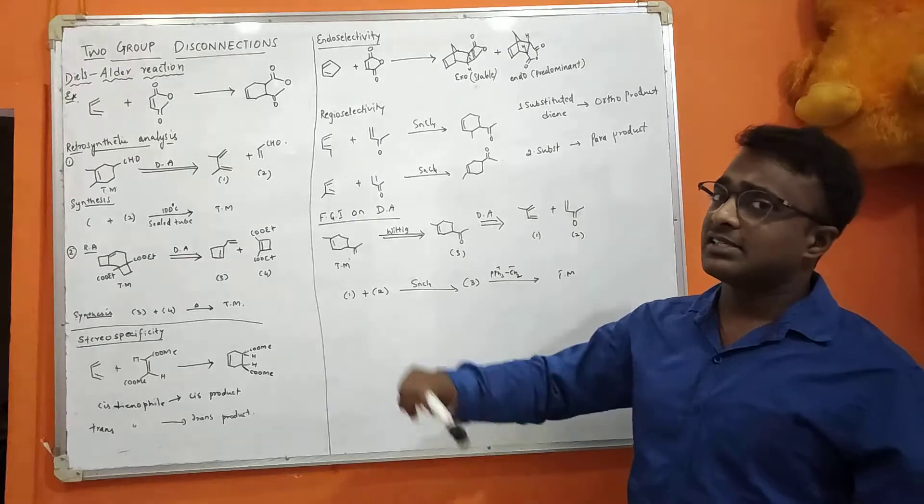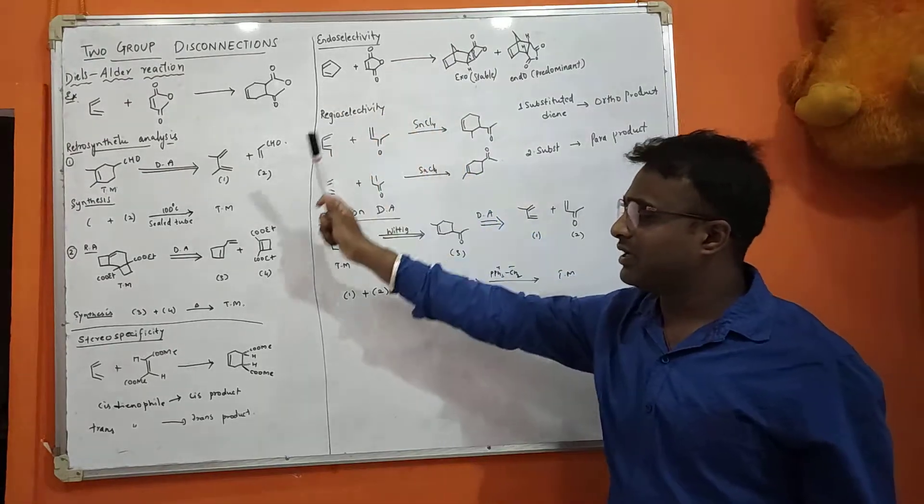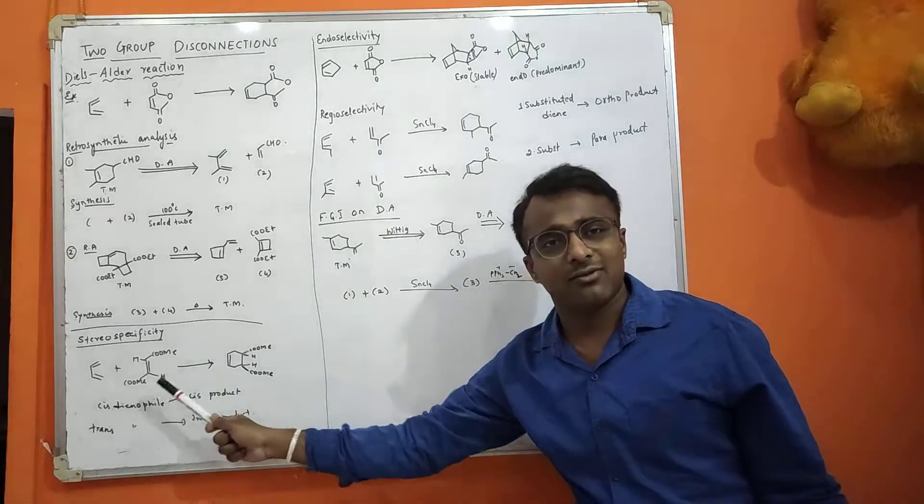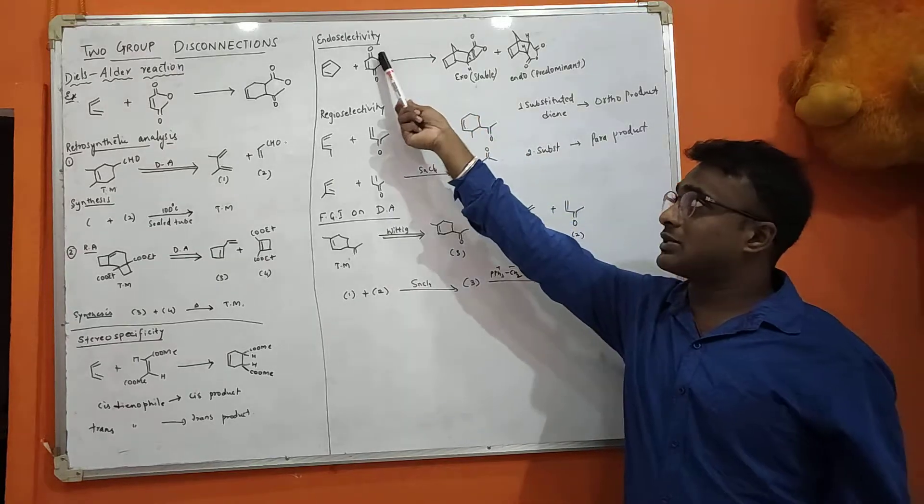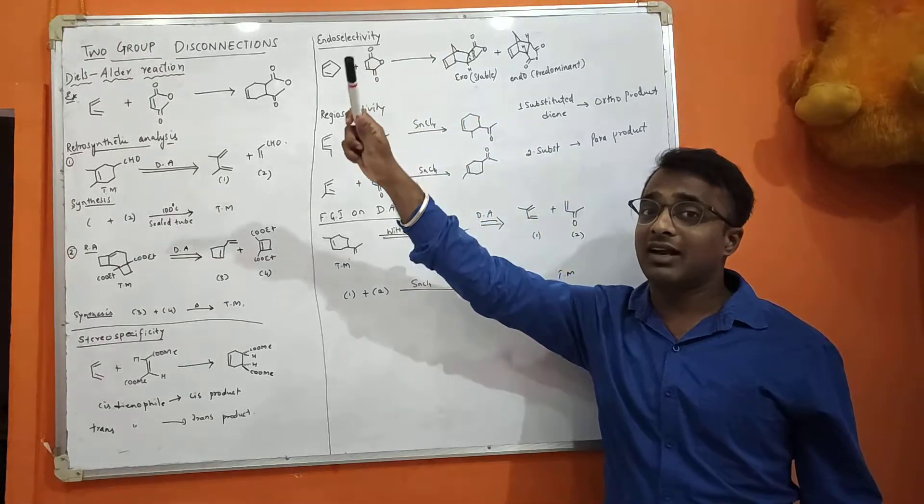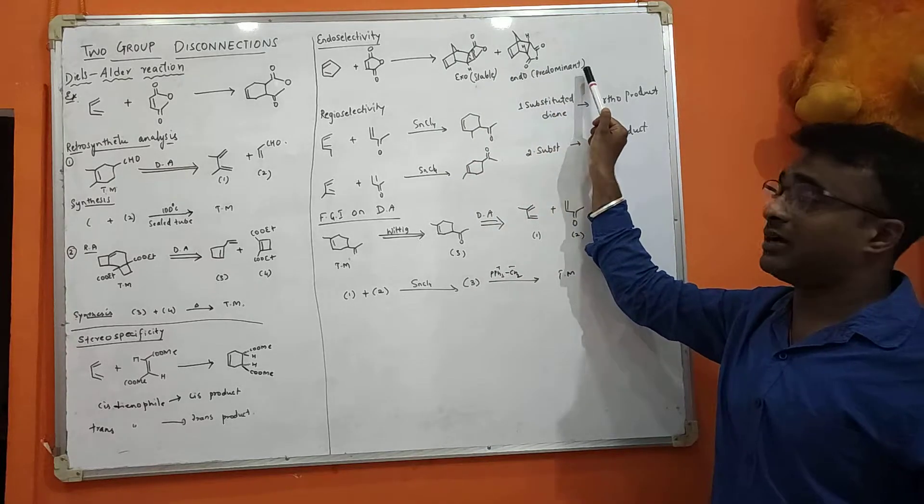Now one more very important thing is stereoselectivity, that is endoselectivity. For cis we are getting cis, for trans we are getting trans, which is 100%. But in endoselectivity, in stereoselectivity, it is not like that. We are getting two products where endo is predominant.